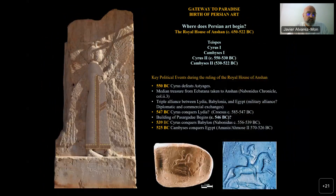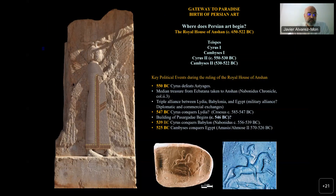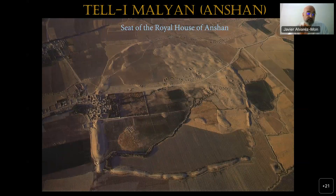Traditionally, the beginning of Persian art commences with the emergence of the Persian Empire under Cyrus the Great and the construction of Pasargade, sometimes soon after the conquest of Lydia by Cyrus the second in 547 BC. According to the Nabonidus Chronicle, when Cyrus defeated the Median ruler Astyages in 550 BC, he took the Median treasure from Ecbatana to Anshan — which, in greater part because of limited archaeological work, remains an archaeological mystery.